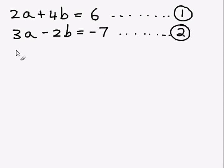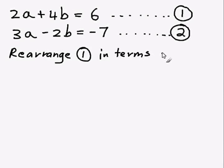Now the object of the substitution method is to rearrange one of the equations so all you've got on one side is just a variable. So we want either just an a or just a b. In this case I'm going to choose to rearrange equation 1 in terms of a, so I'm going to try and get a all by itself on one side of equation 1.